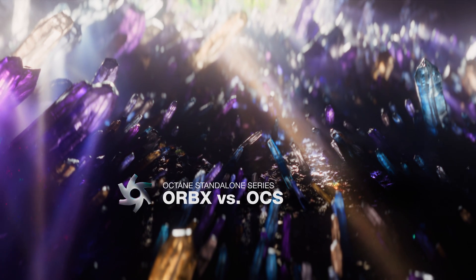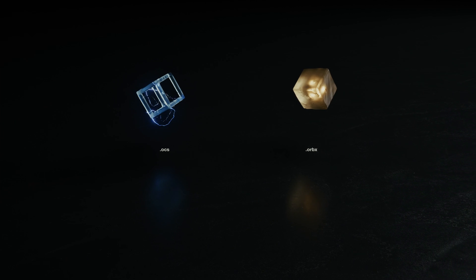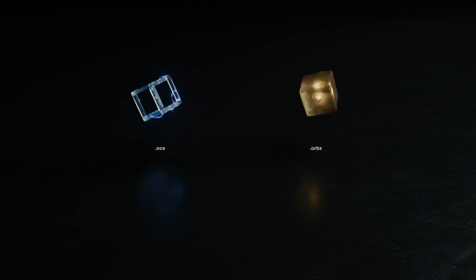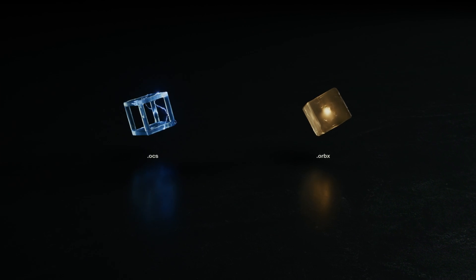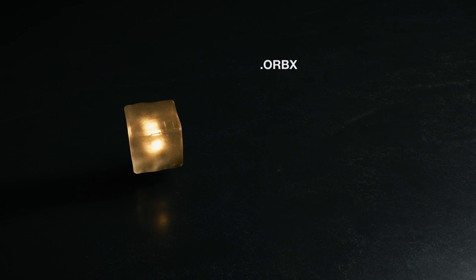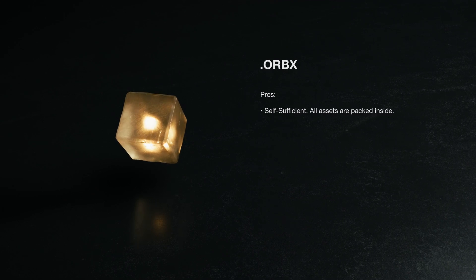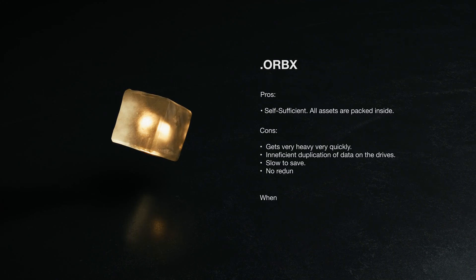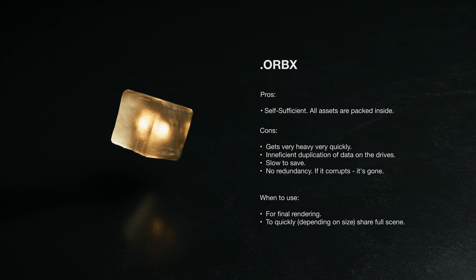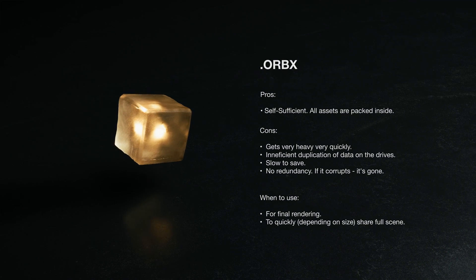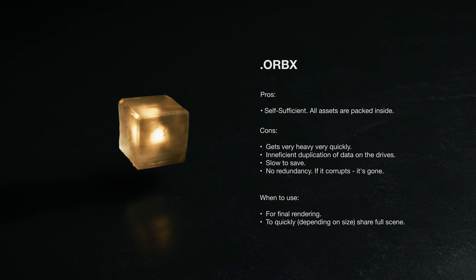Let's discuss ORBX and OCS differences. Both are Octane-native project files, except ORBX is a packed container — a self-sufficient project file. You open it up and it has all the assets within it. The ORBX scene size will accordingly reflect that: the bigger your assets, the bigger the ORBX will get.